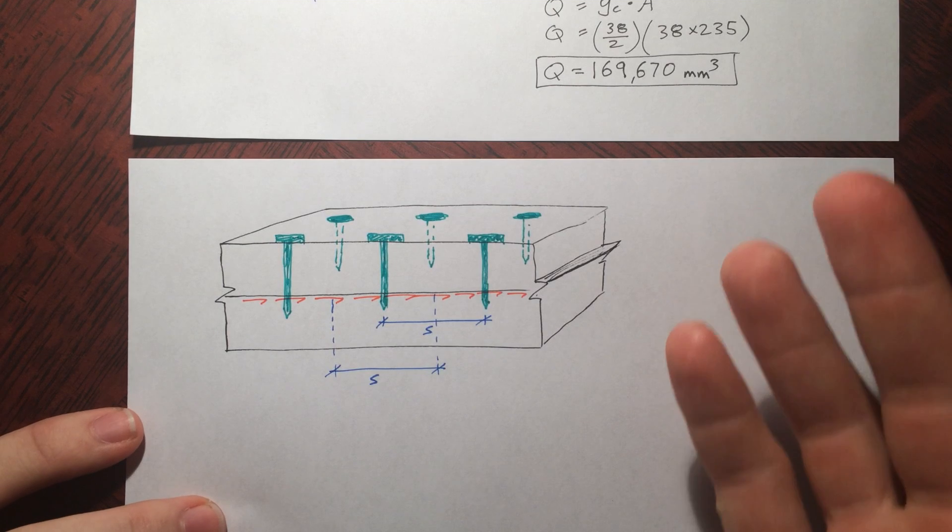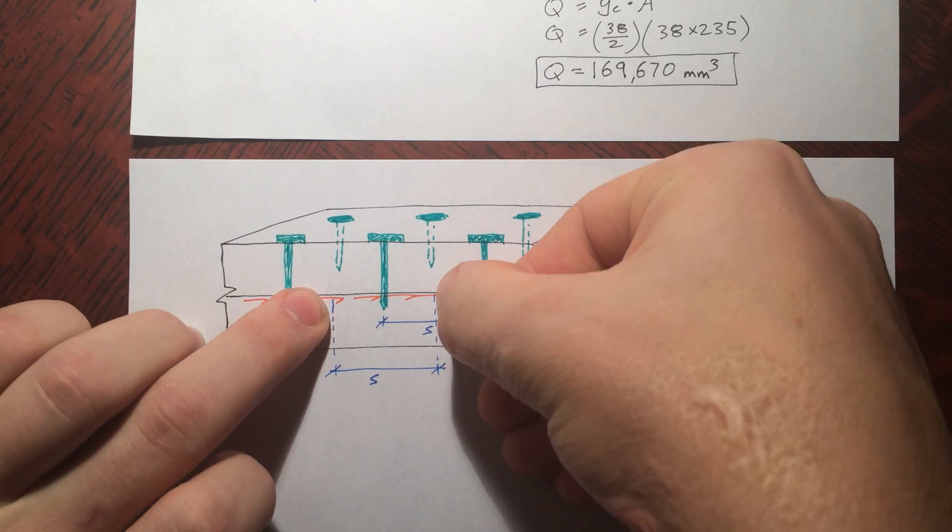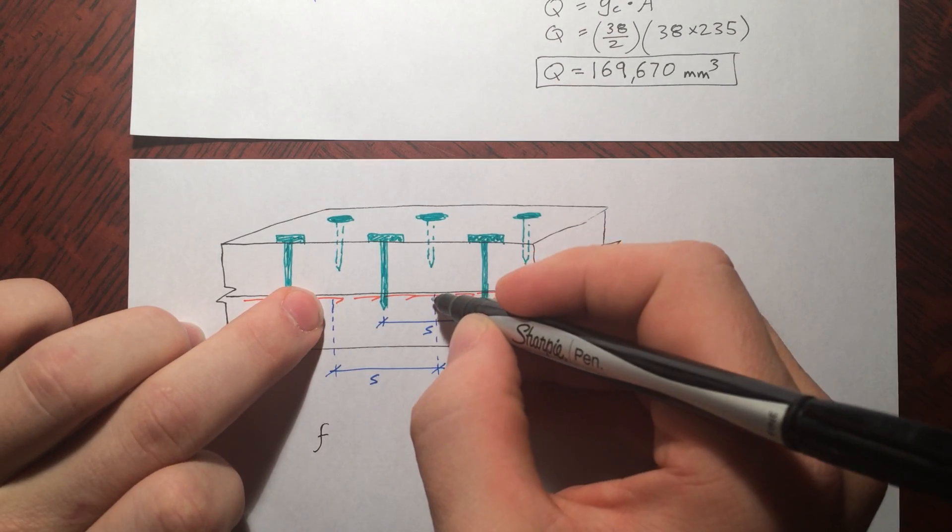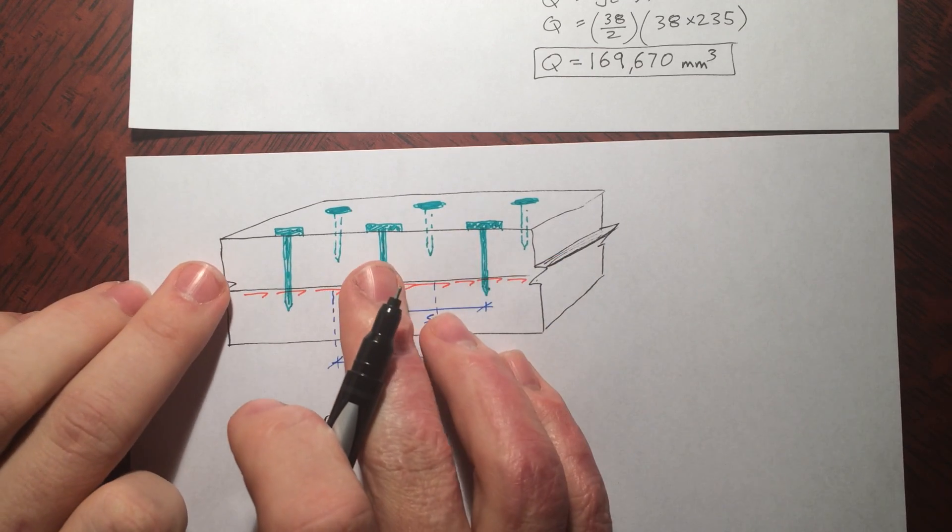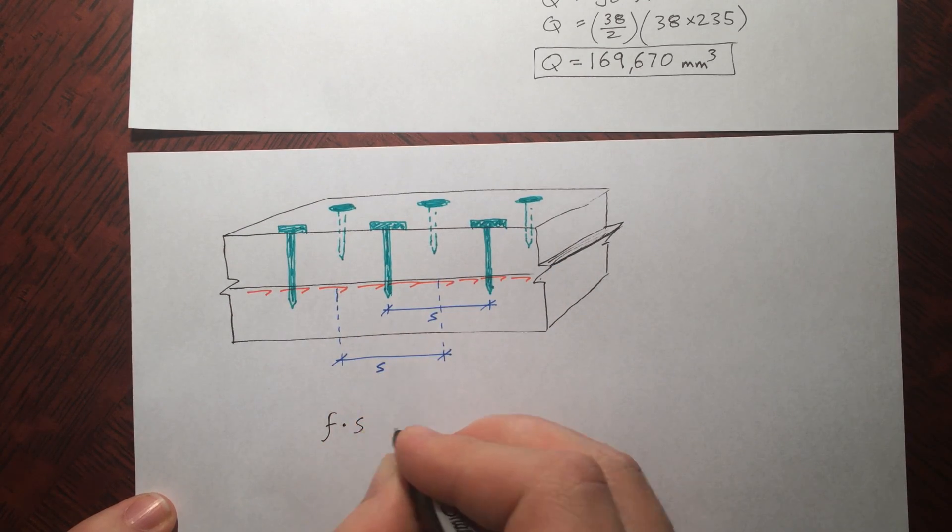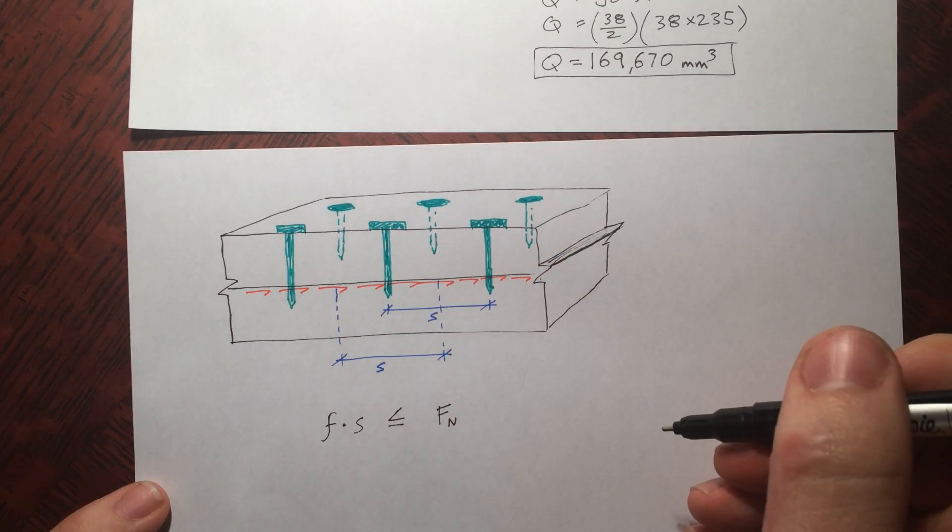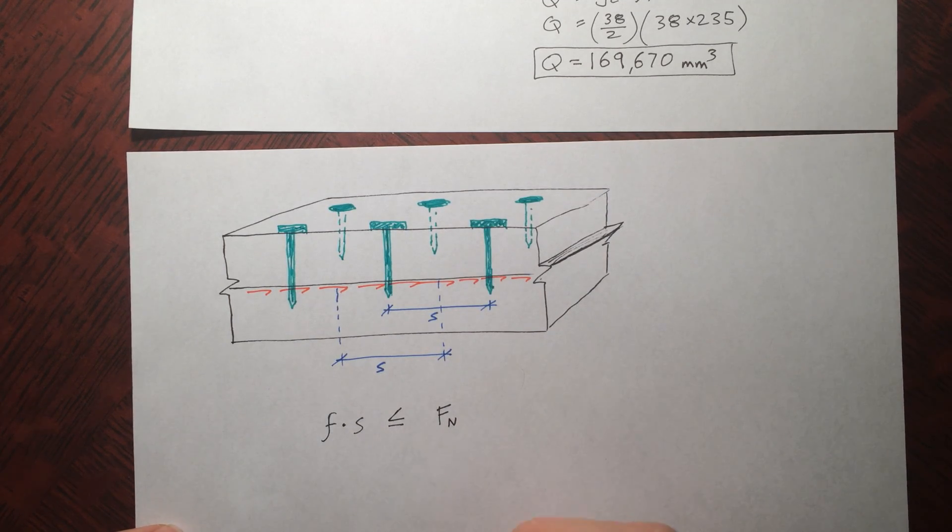So shear flow is in newtons per meter, the amount of newtons per every meter of shear. So we can say, if we look at this piece, that the shear flow, newtons per meter, and we're going to assume that one nail picks up all the shear flow of this piece here, that this nail picks up all the shear flow from here. Basically, it takes half on one side, half on the other side between its neighbors. So F times S has to be equal to, or less than, the force of the nails. So basically, if the shear flow is going this way, the nail is going to resist the other way, and we have to make sure that the force of the nails is greater than the shear flow, otherwise it's going to shear off.